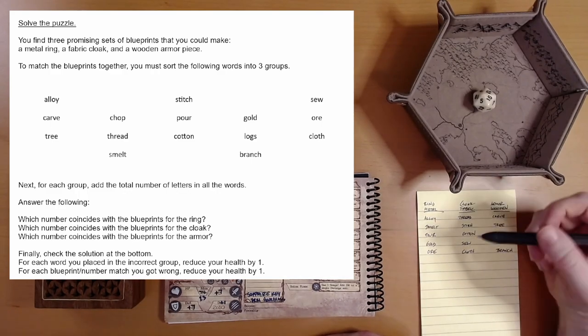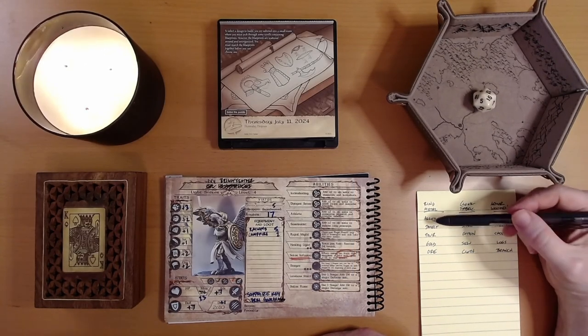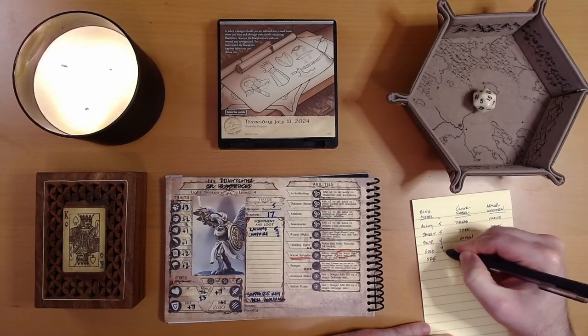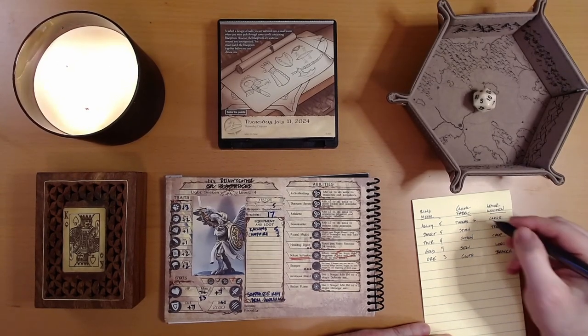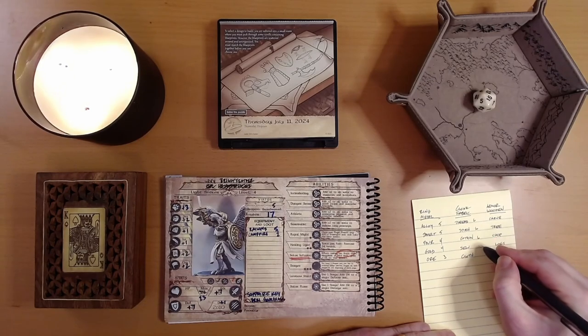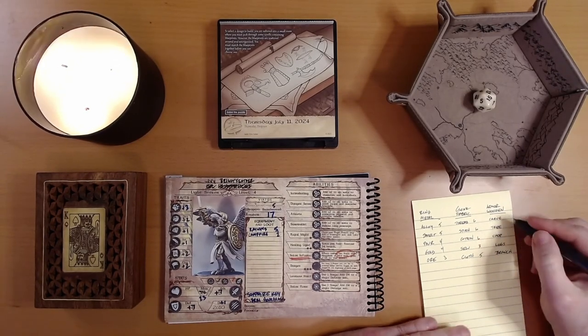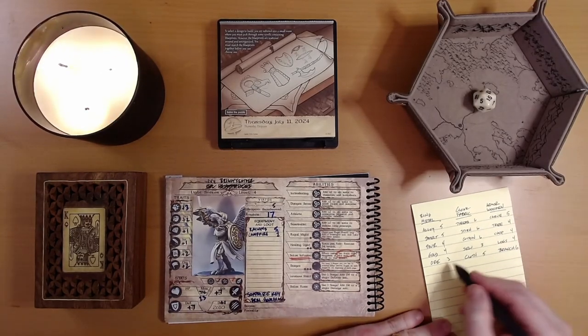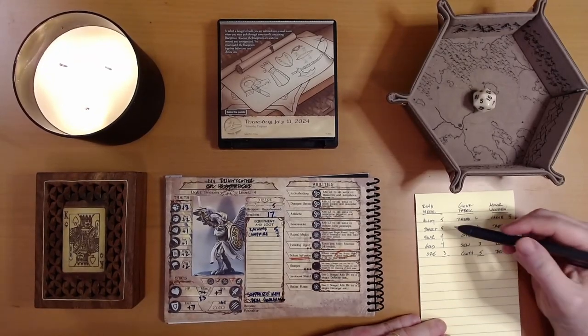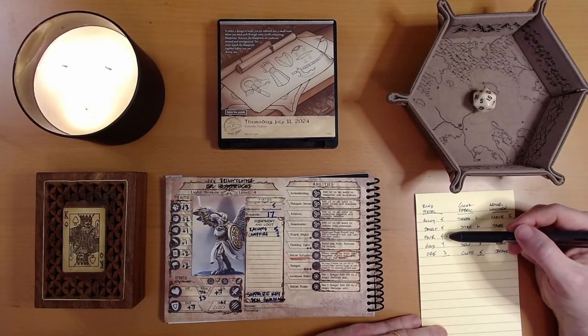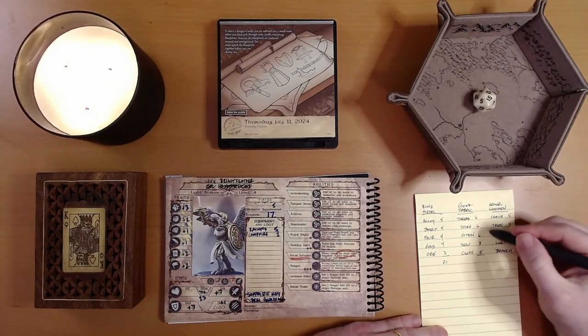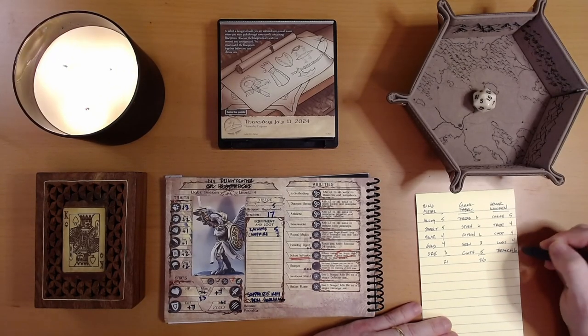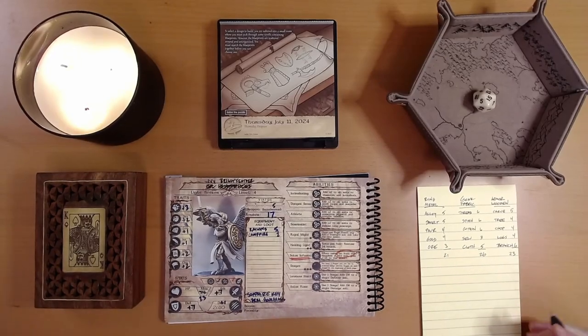Now we count. Alloy is five, four, four, three. Smelt is five, pour is four. That's twenty-one for metal. Stitch is six, cotton is six, thread is six, sew is three, cloth is five. That's twenty-six for fabric. Carve is five, chop is four, tree is four, logs is four, branch is six. That's twenty-three for wood.